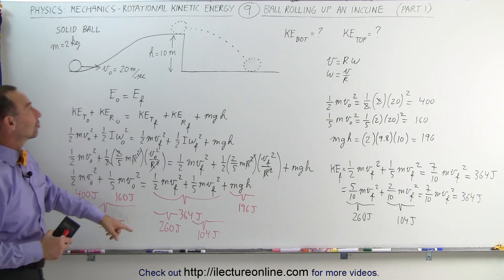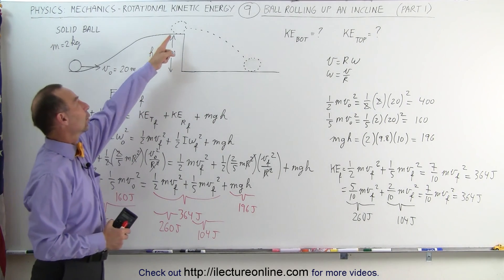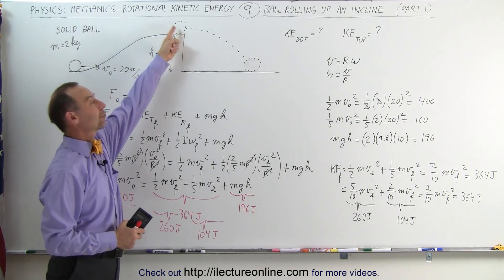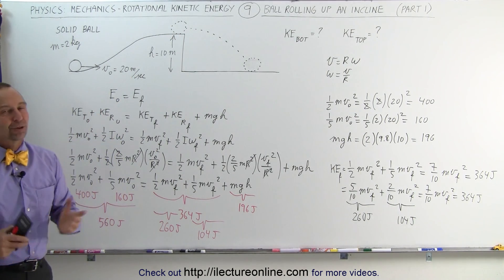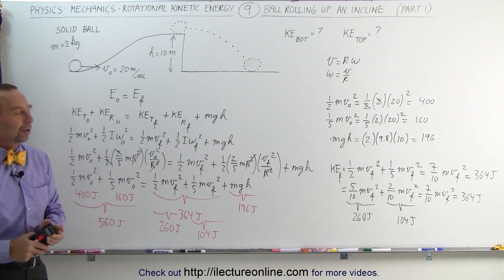So here's a really good example to see how the energy is divided between both translational and rotational kinetic energy at the bottom, and at the top it's a combination of translational, rotational, and potential energy. That's part 1 of this problem. In part 2 we'll actually calculate what the velocity must be at the top of the incline. Stay tuned for part 2. Thank you everybody.